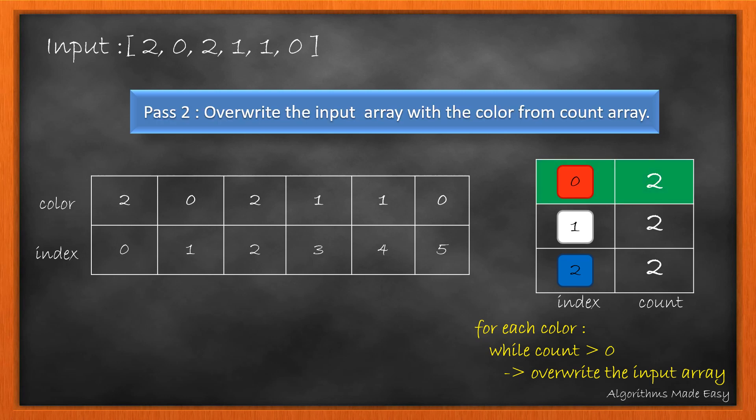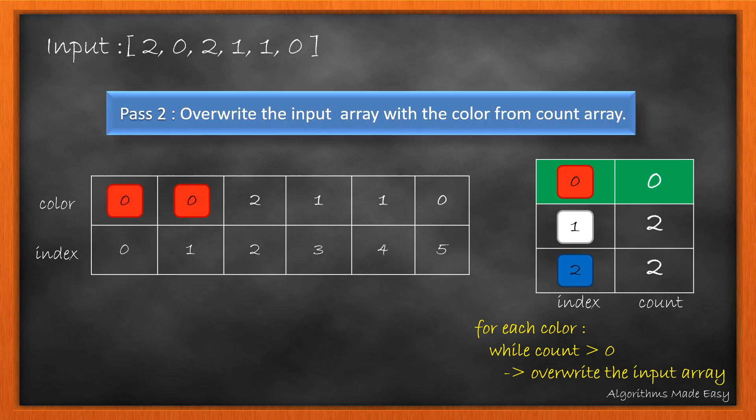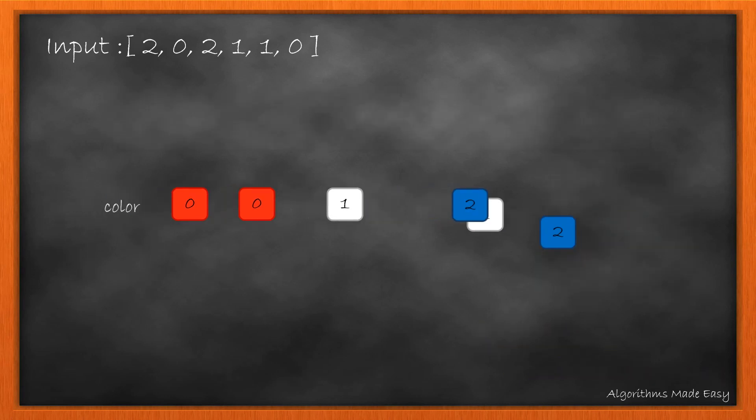Taking our first color red with index 0, as the count is 2 we will override the first two indexes of the input array with 0 that represents red. Similarly for white and blue. Now this is a final sorted array.